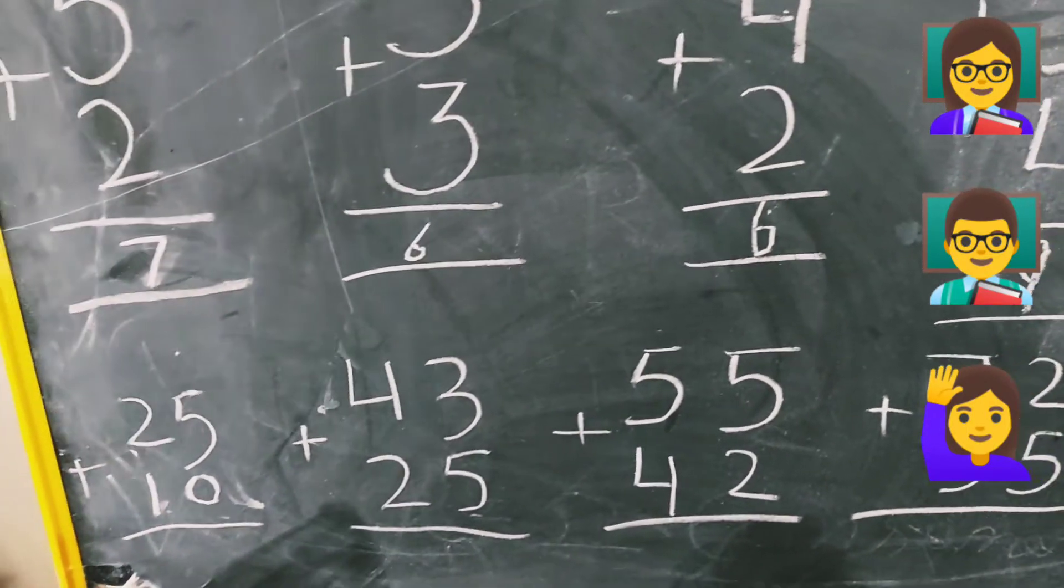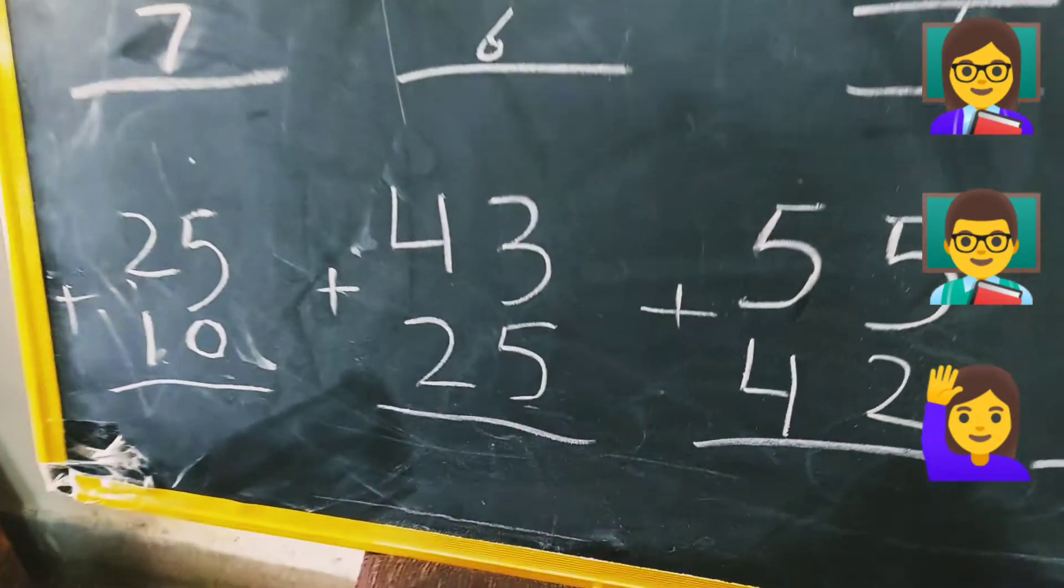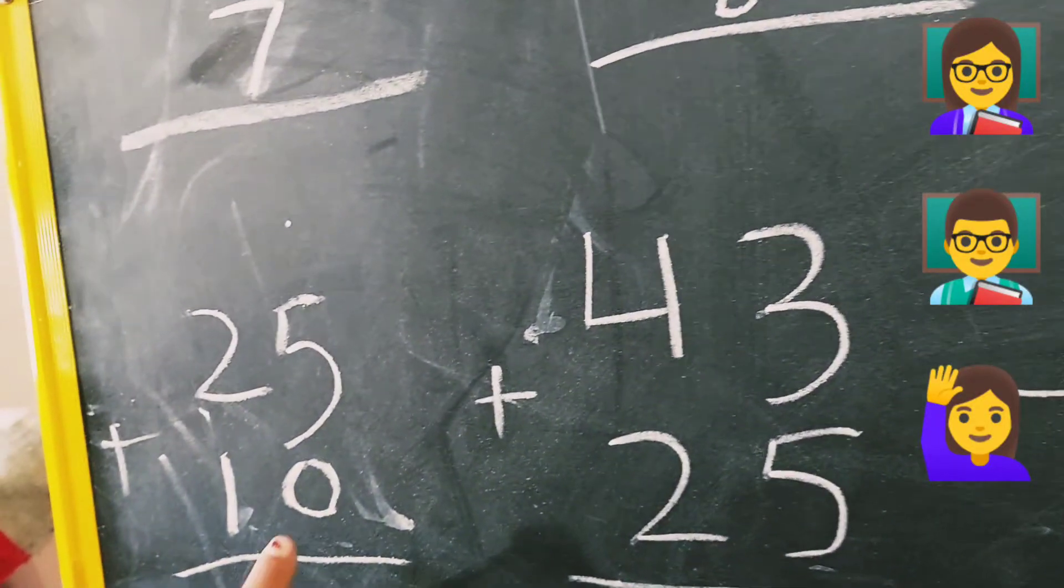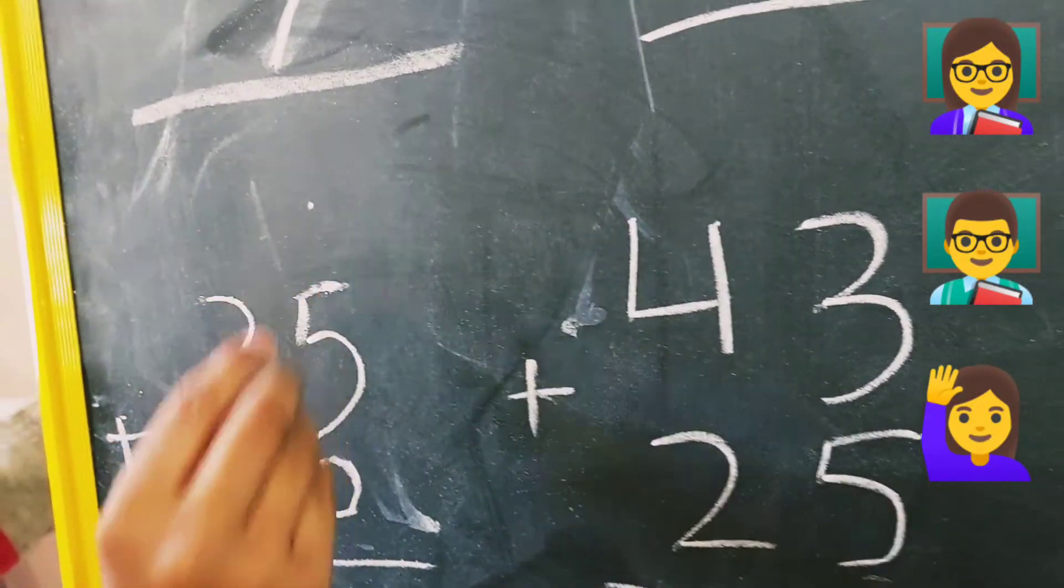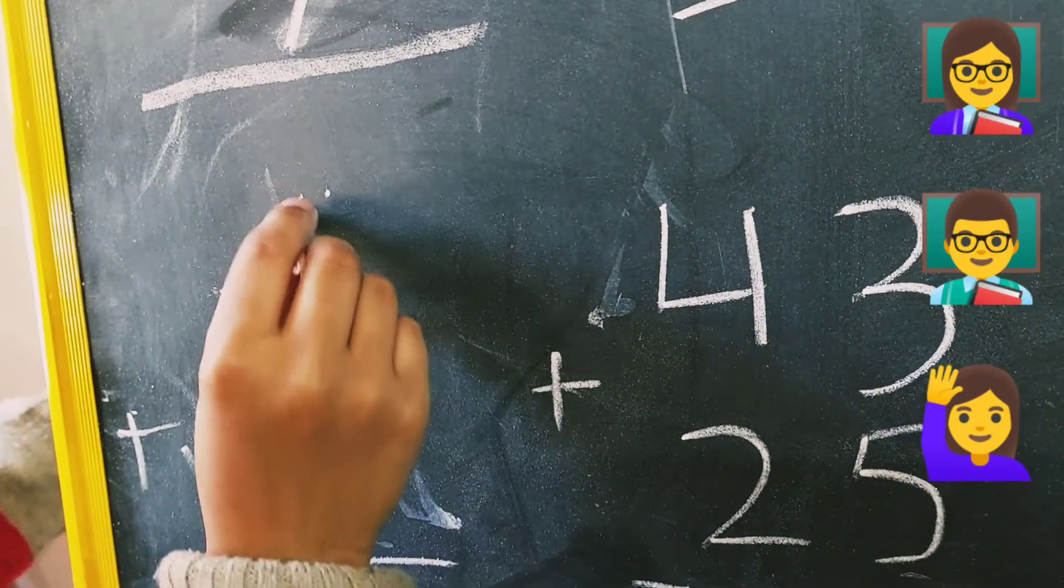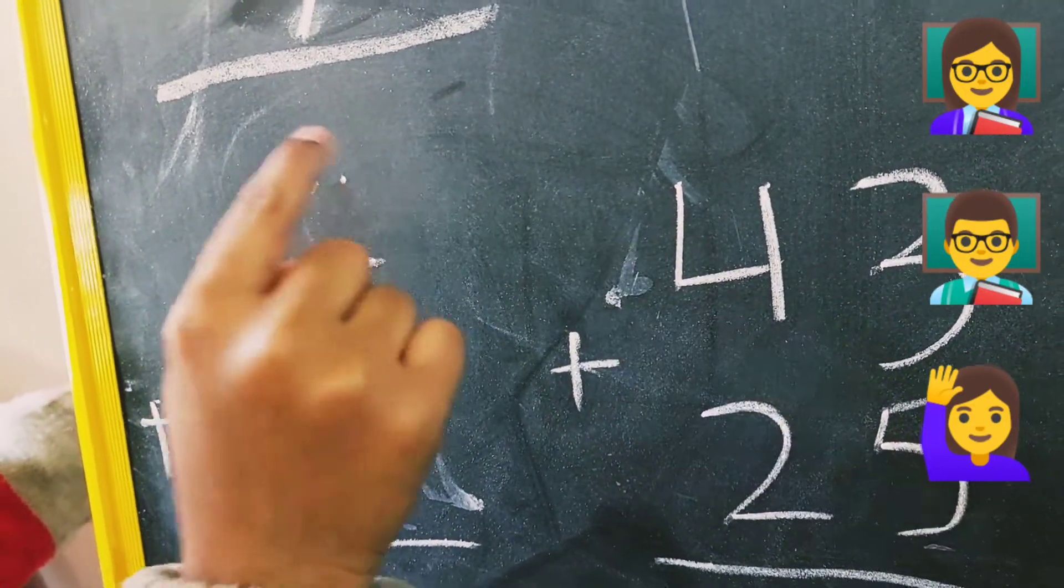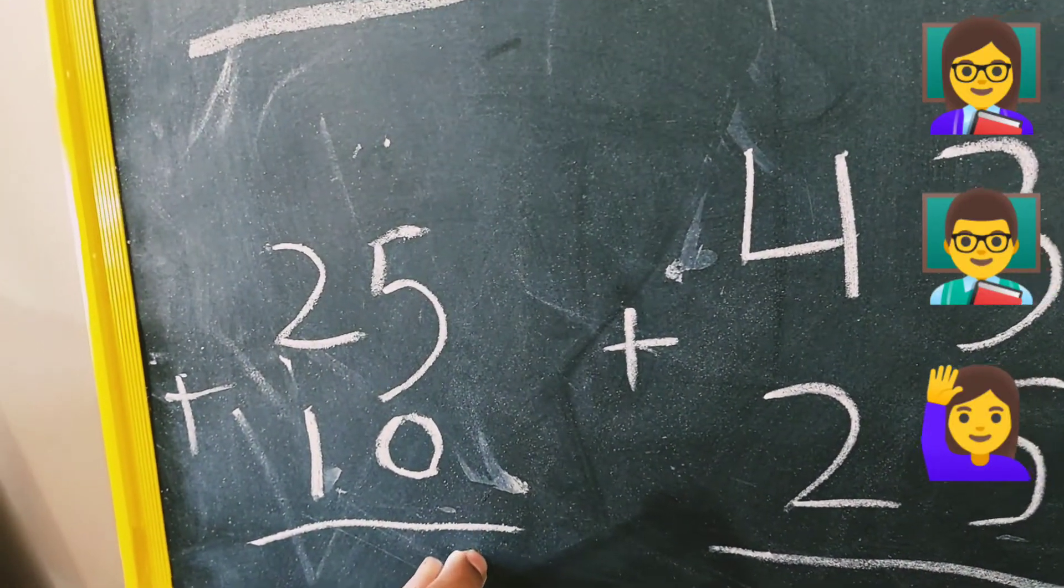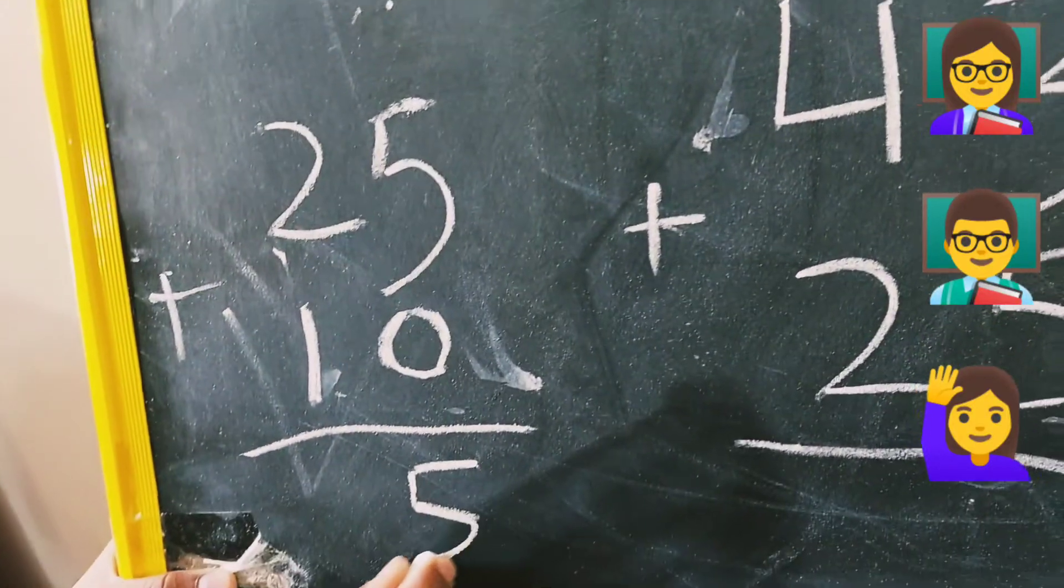Ab hum karengay double digit number. So friends, now here we have the zero. And when he zero atta hai, toh, five me zero add karengay toh, always five hi rata hai. So friends, five hi rata hai agar hum five me zero add karengay hai.